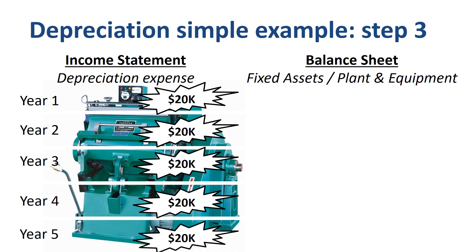In this example, after 5 years the asset is fully depreciated. The remaining book value on the balance sheet is zero, and you have recorded $100,000 over 5 years in the income statement as depreciation expense.